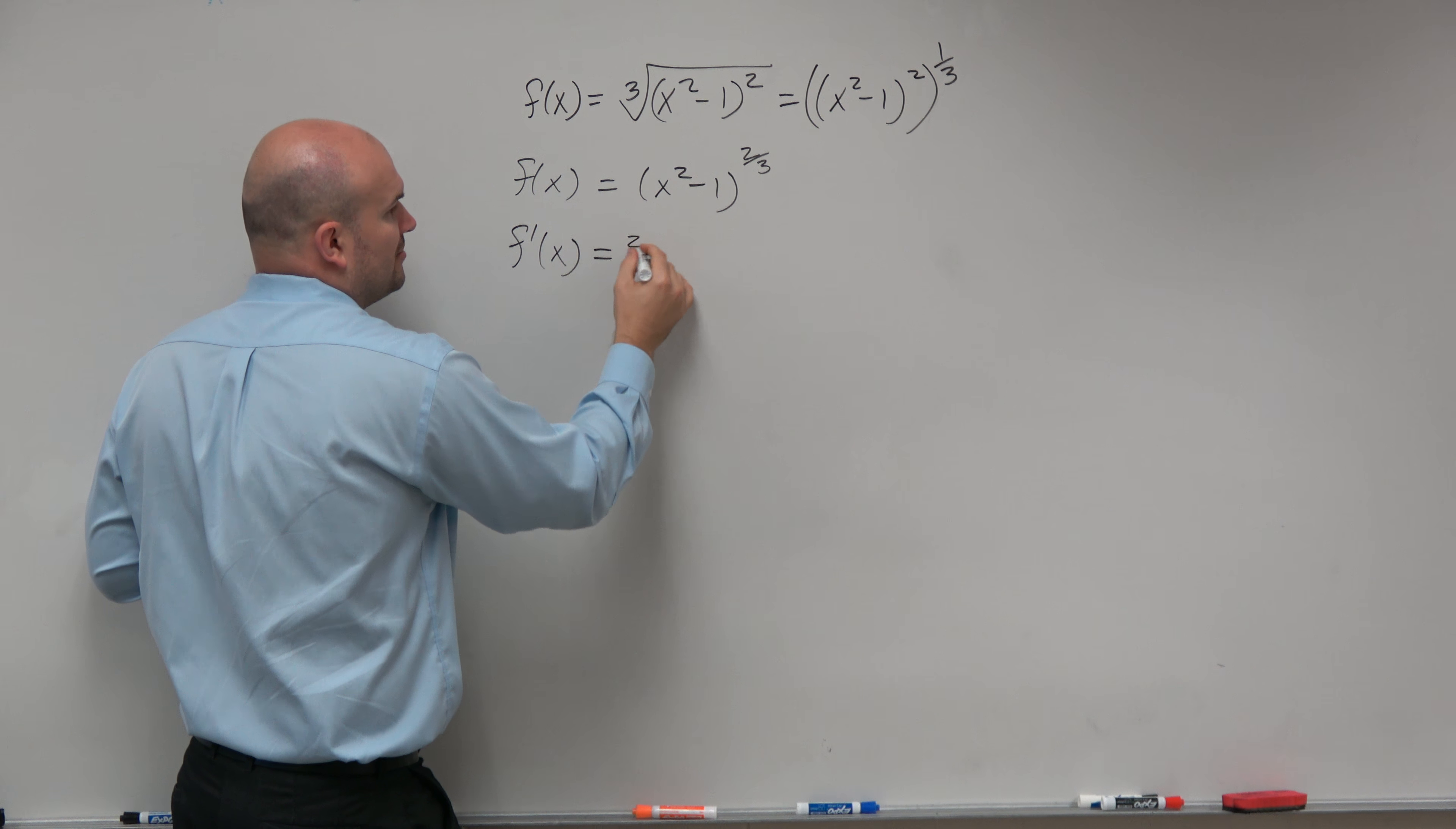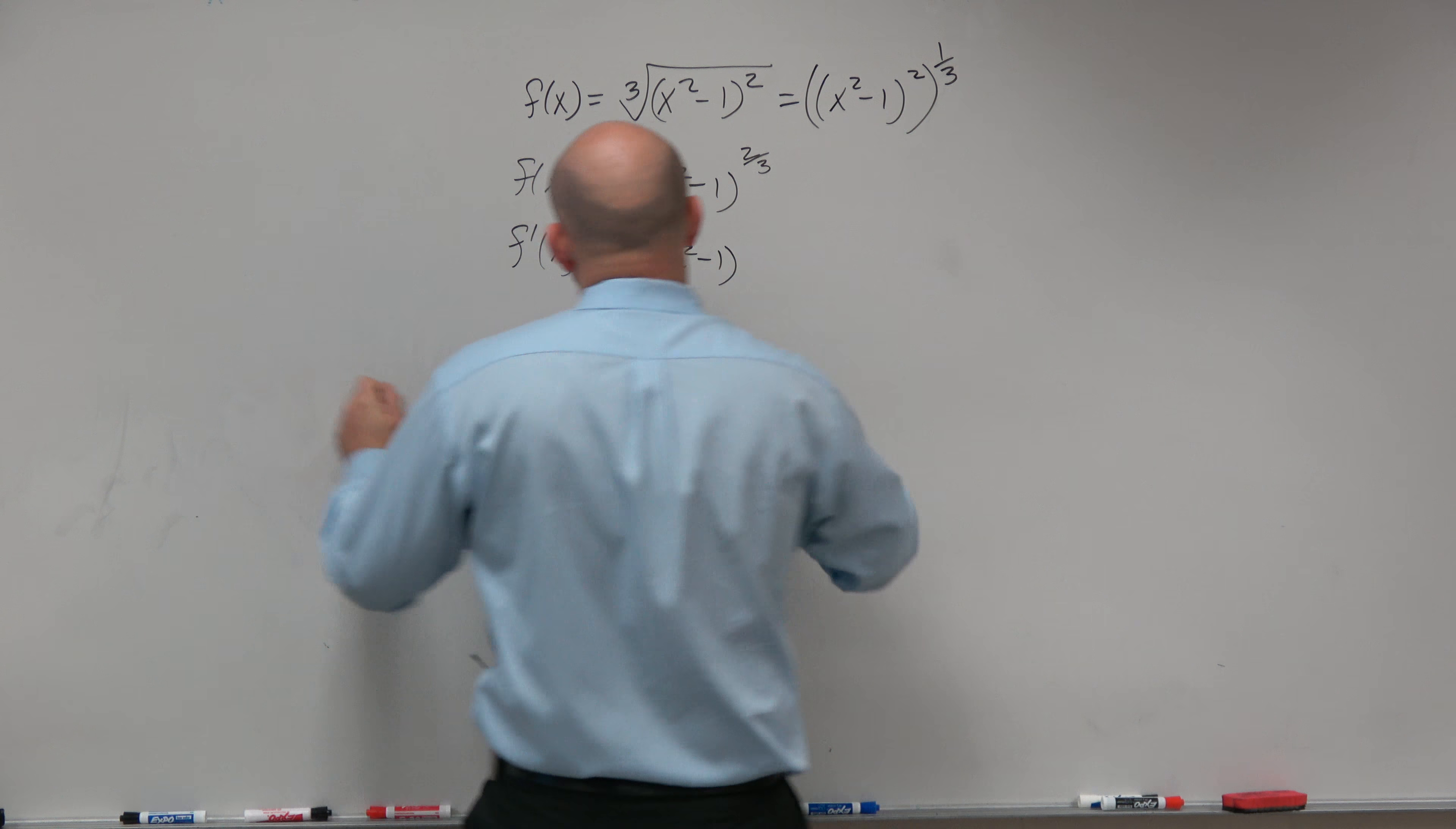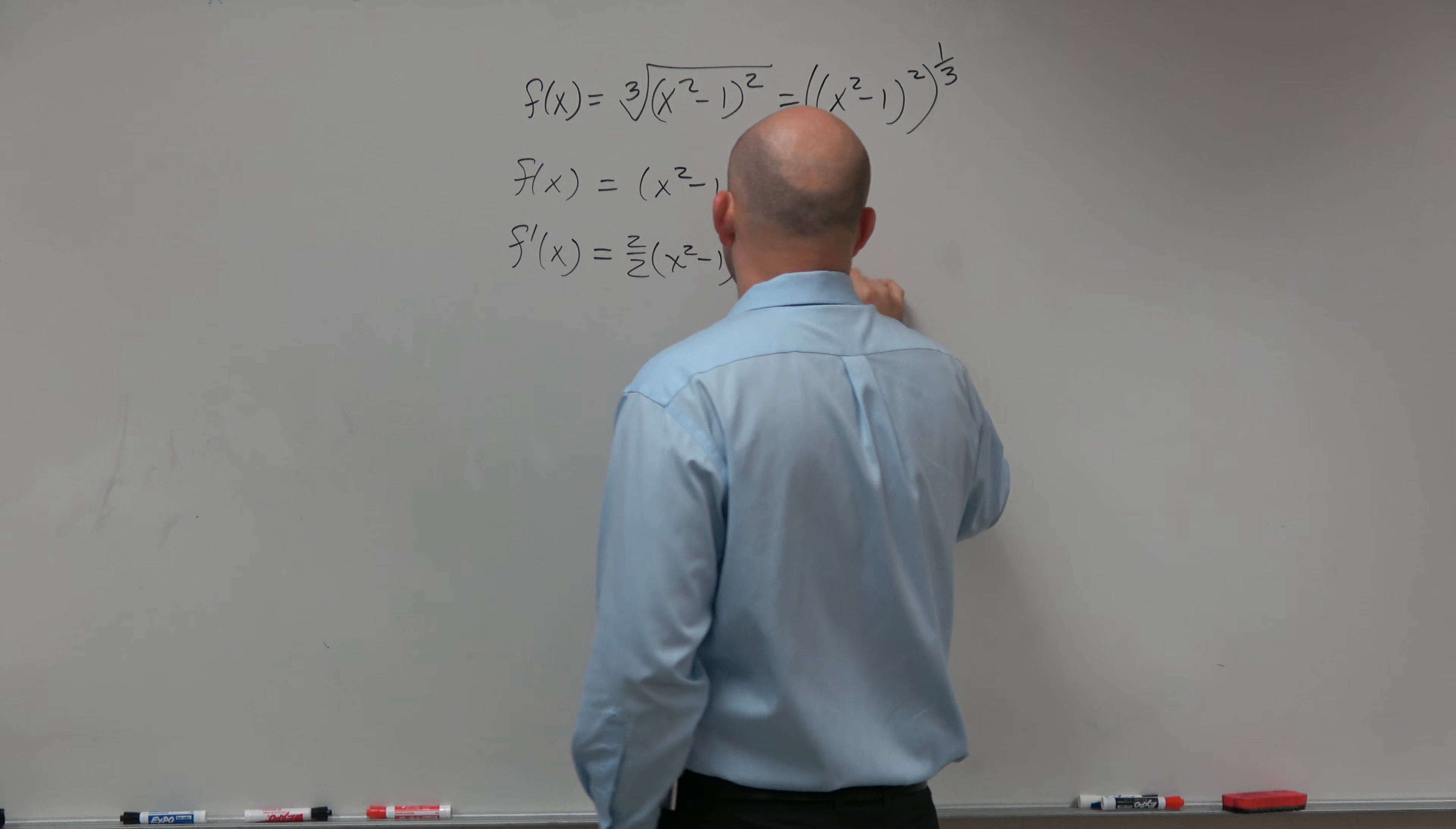So by taking the chain rule, we're going to bring down the 2/3, keep the inside function, subtract 1 which would really be 3/3, so therefore it's going to be negative 1/3. And then times the derivative of the inside, which is 2x.